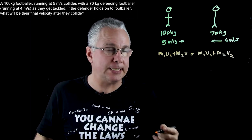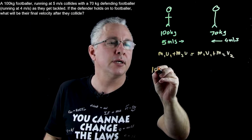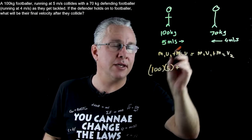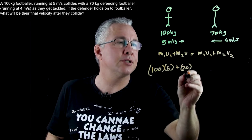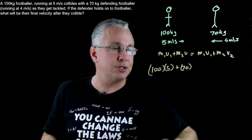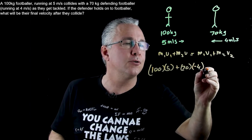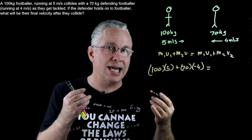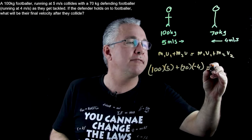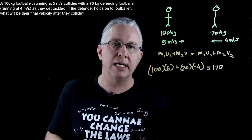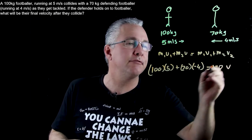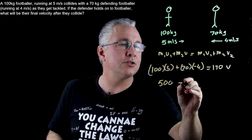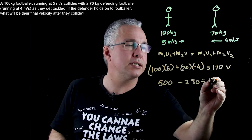Now we substitute values in. Mass one is 100, multiplied by their velocity of 5. The other footballer has a mass of 70 kilograms but their velocity is going in the opposite direction, so we multiply by negative 4. Since they hold together, we combine their masses and treat it as one single mass of 170, with a common velocity V. Calculating that out: 500 minus 280 equals 170V.